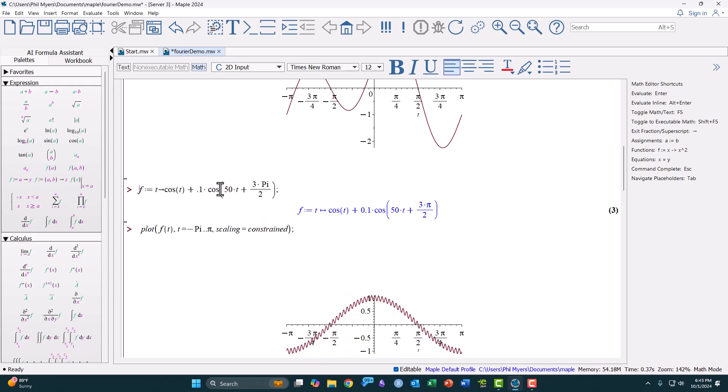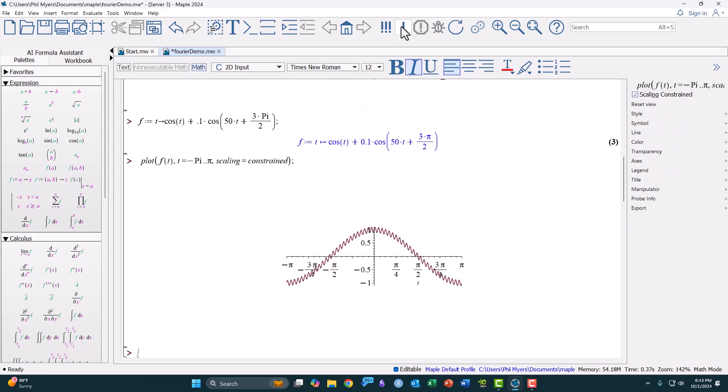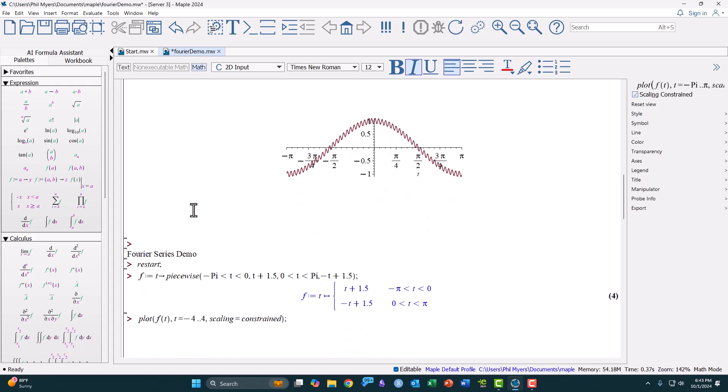And here I'll add cosine of 50. And you can see that the high frequency is embedded in the cosine. The basic idea of the Fourier series is that I can create any function if I have enough sine and cosine terms. So I'll demonstrate that next.